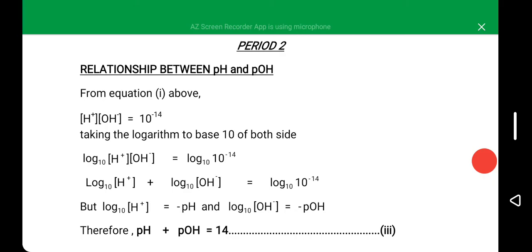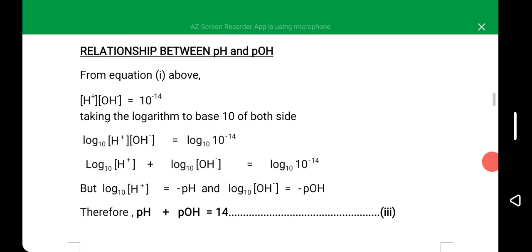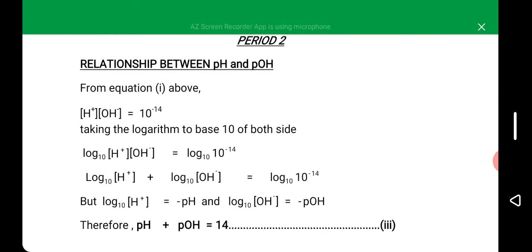Remember, in our last class I gave you the formula for calculating the pH, which says pH is equal to negative logarithm to base 10 of hydrogen ion concentration. We can have the same formula in terms of hydroxide ion concentration — pOH is equal to negative logarithm to base 10 of hydroxide ion concentration.